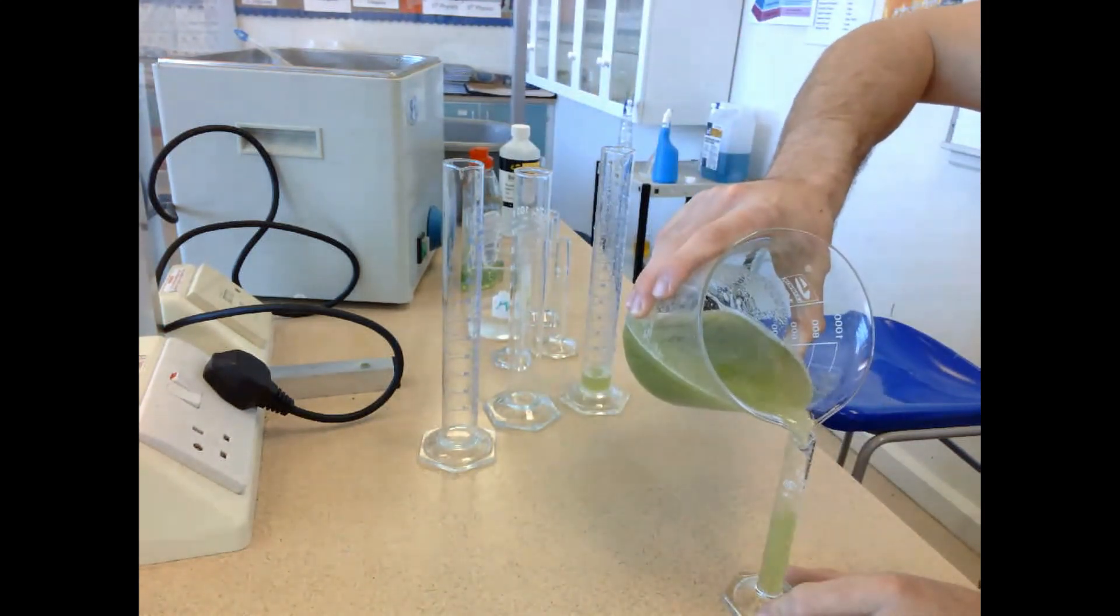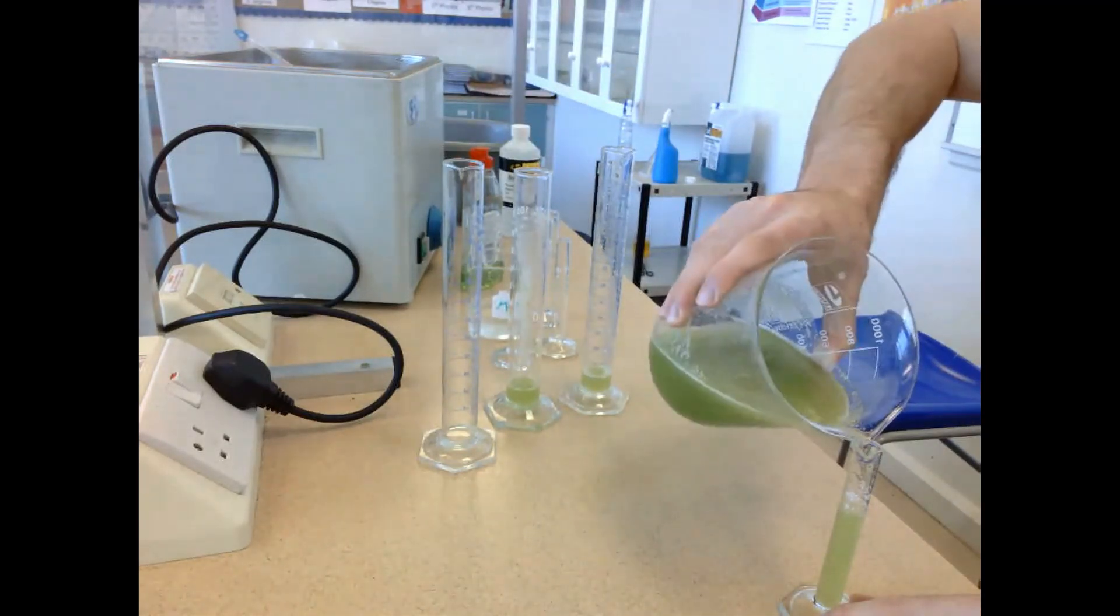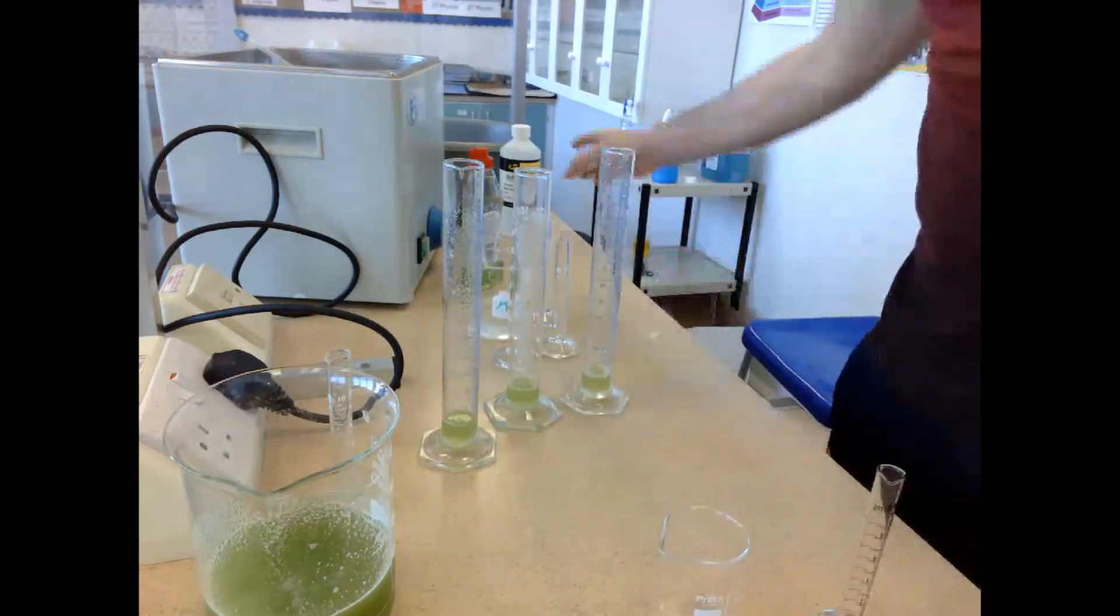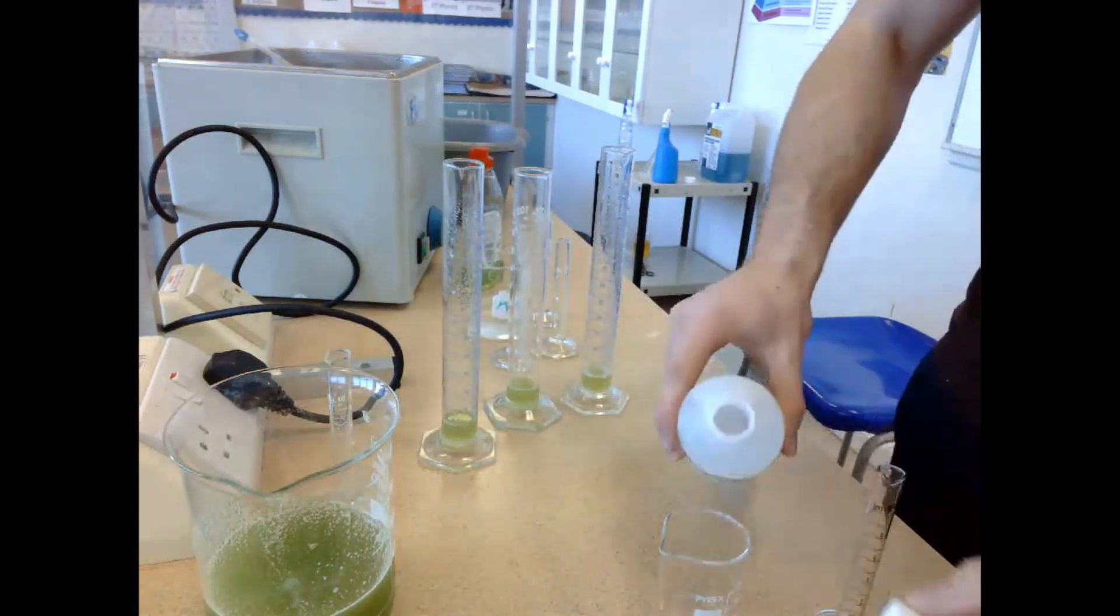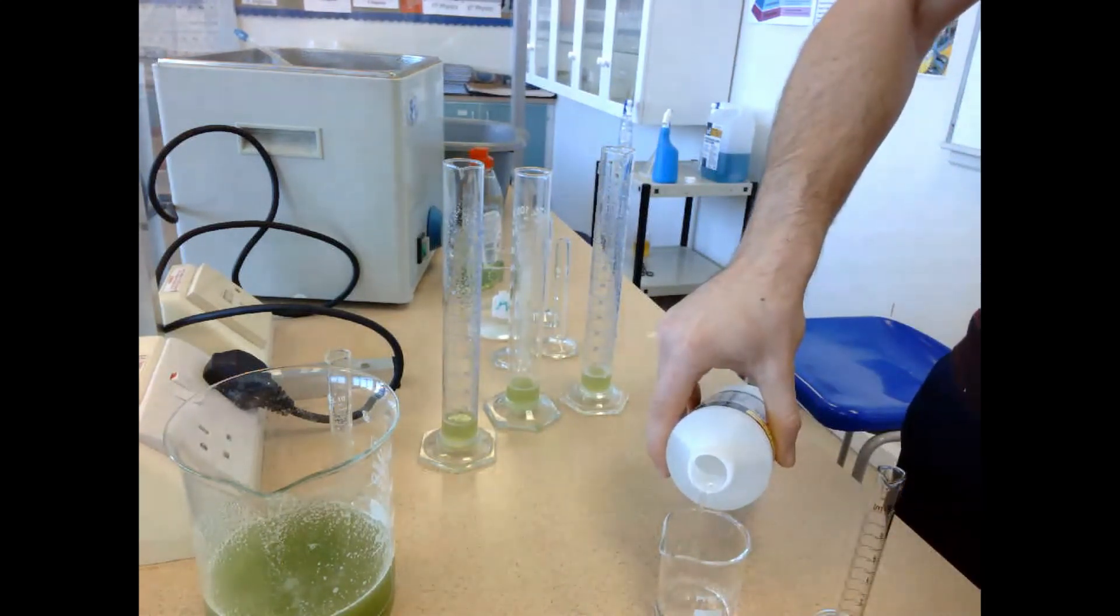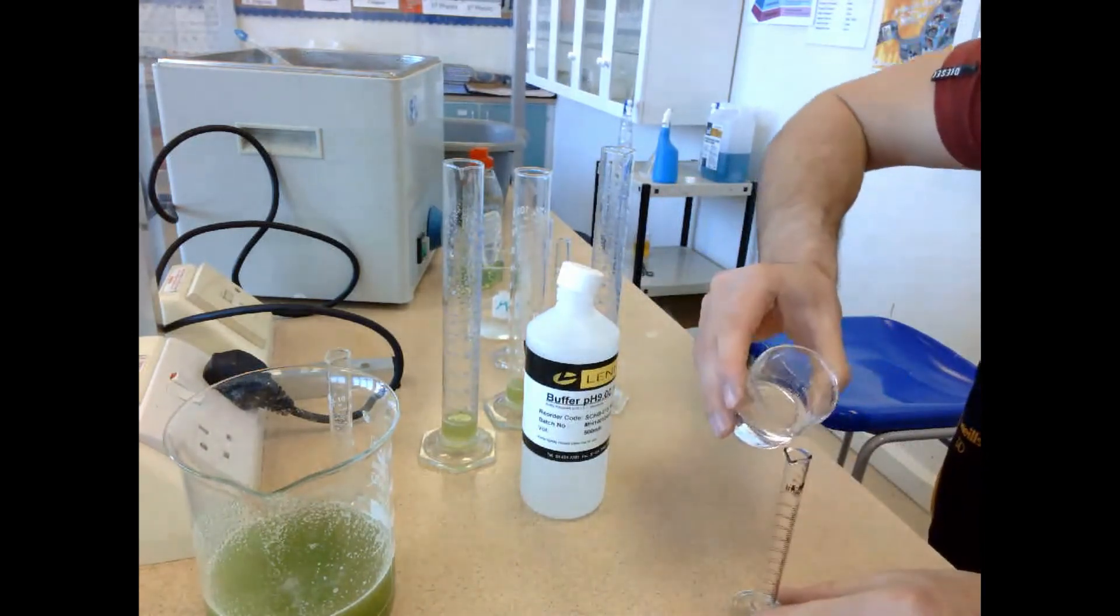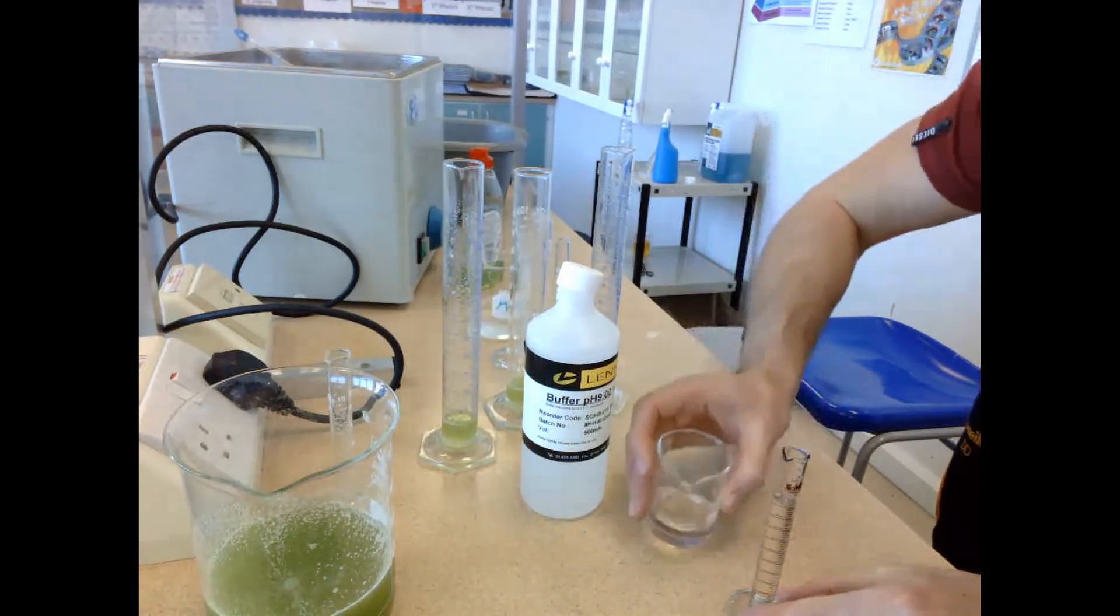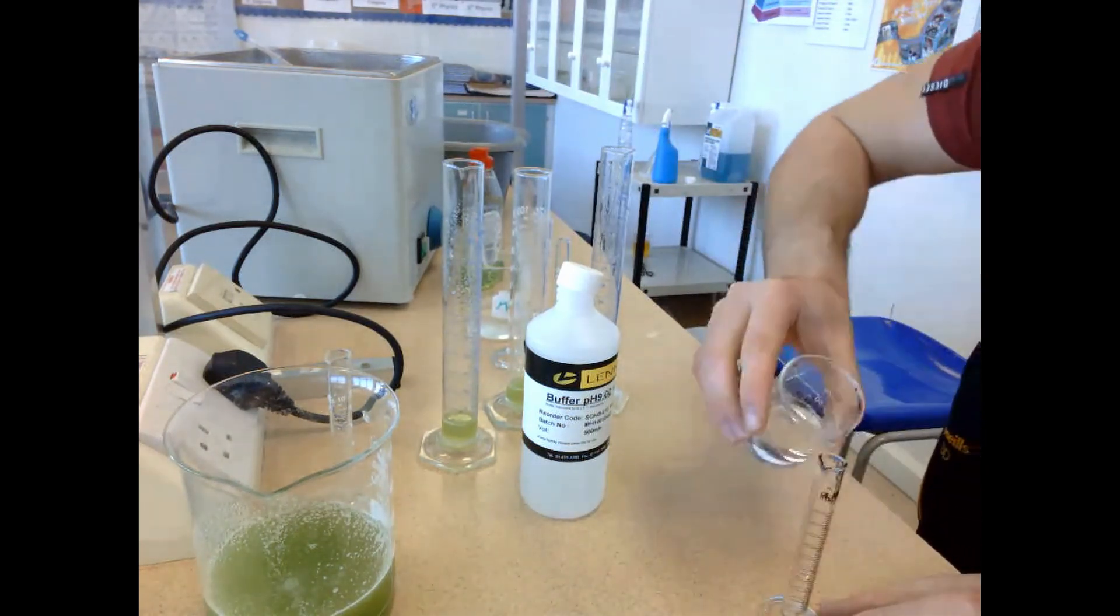Once the celery juice was added, the next step was measuring 10 milliliters of pH buffer 9 for each graduated cylinder. The pH buffer maintains the pH of the solution throughout the chemical reaction. I added 10 milliliters to cylinder one, then repeated the process for cylinders two and three.